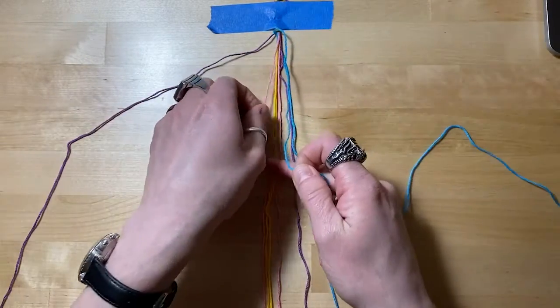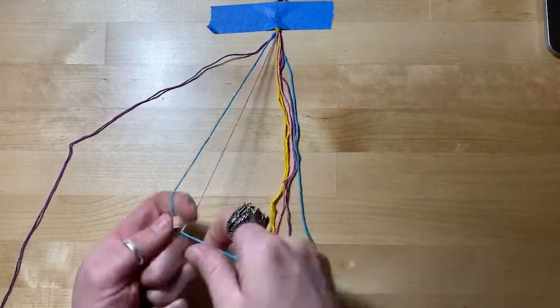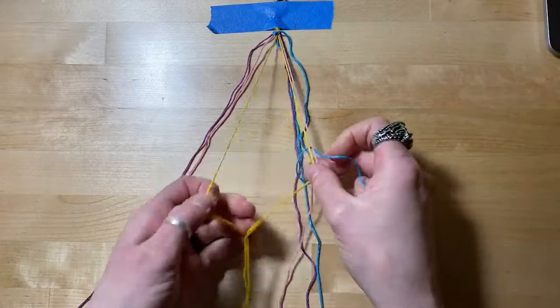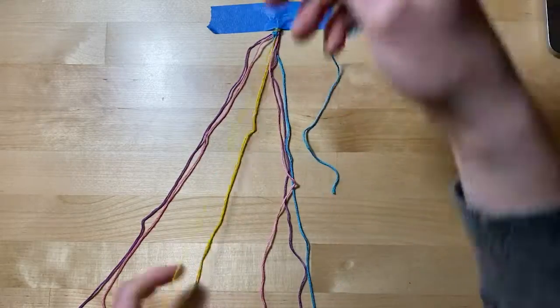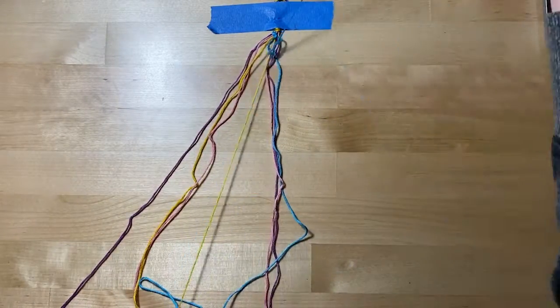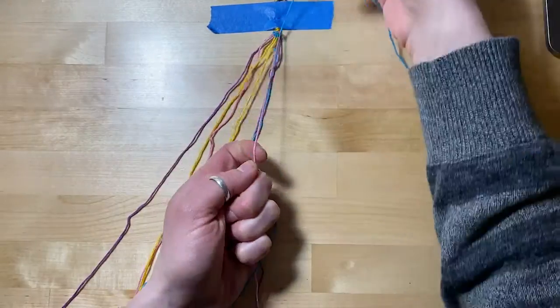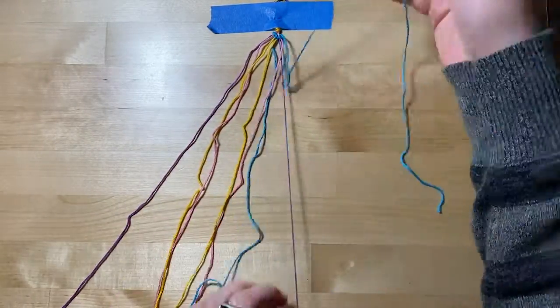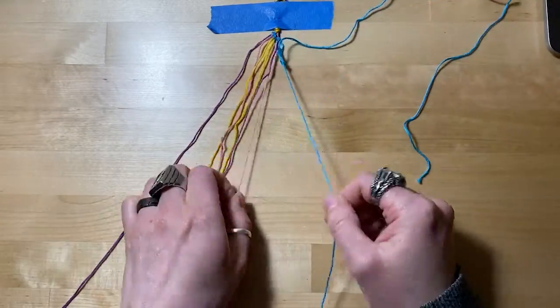That's blue around purple two times, twice around pink, twice around the first yellow, and so on all the way down the line. As you can see, the blue string that we started with is now on the right side even though it started on the left.